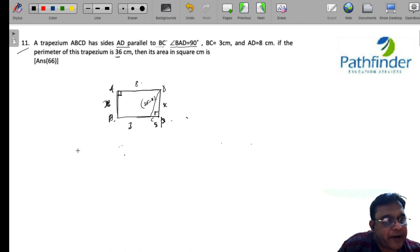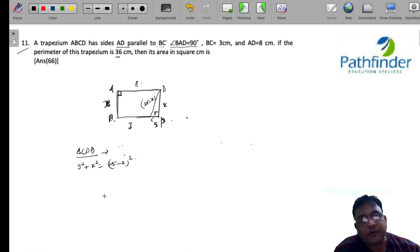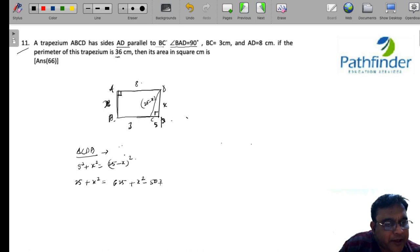So, triangle CPD, we have 5 square plus X square equals 25 minus X whole square. This should give you the value of X. So, 25 plus X square equals 625 plus X square minus 50X. X square and X square cancels out, and you have 50X equals 600.